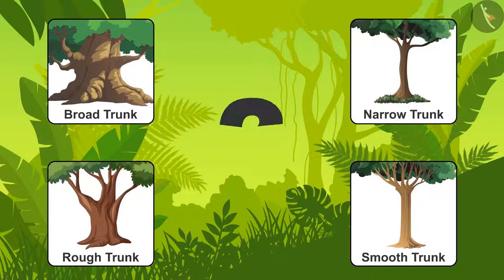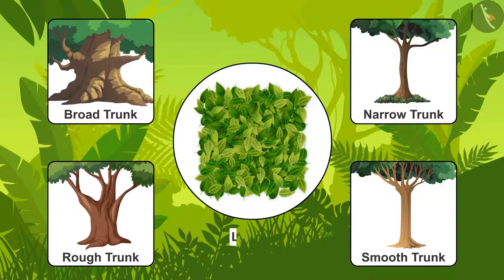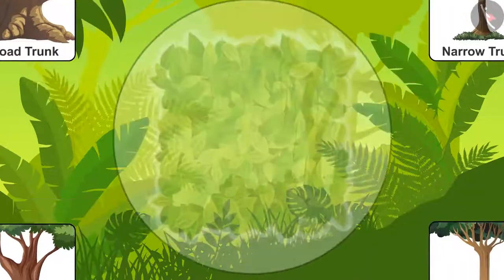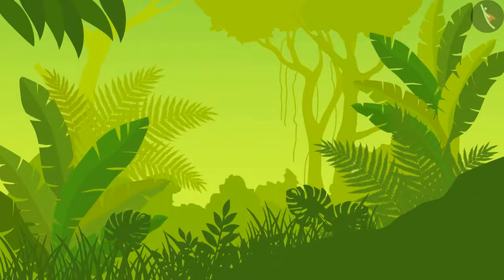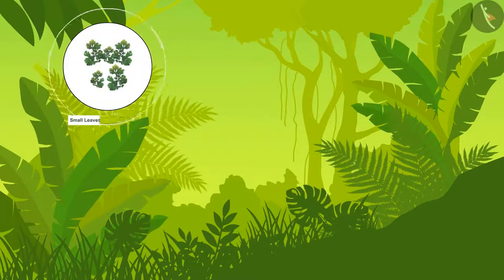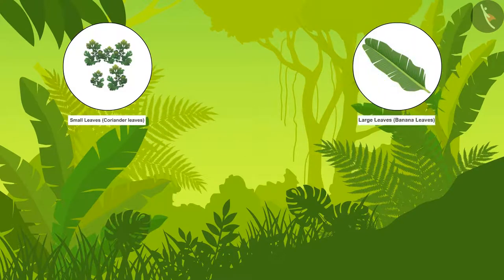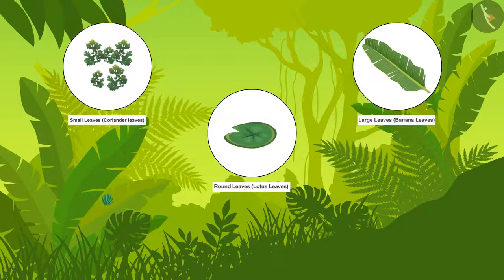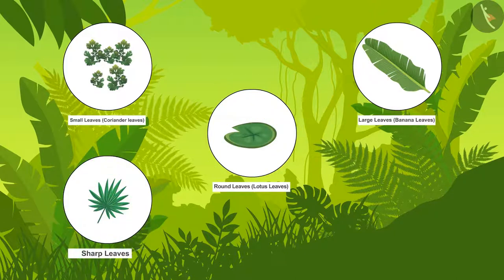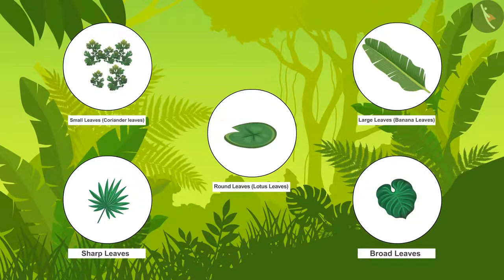What gives trees their green color? Their leaves! Let us now pay close attention to the leaves. Some leaves are small, like those of coriander. Some are large, like the leaves of a banana plant. Some leaves are round, like the leaves of a lotus plant. Some leaves are sharp, like needles, and some are broad.